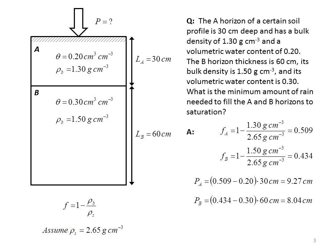It's the same process for the B horizon. All that changes is now we have the B horizon porosity and we subtract off the B horizon initial water content, 30%, and we multiply by the B horizon thickness, and we get 8.04 centimeters of water needed to fill the B horizon to saturation.